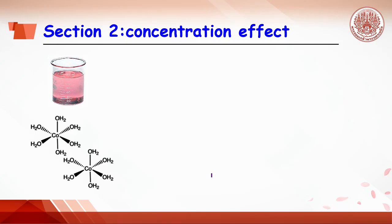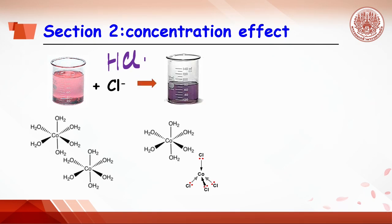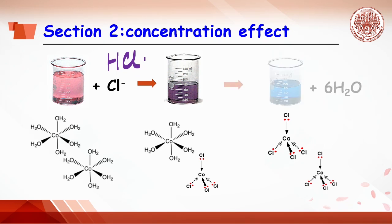Section two is aimed to see the color change by shifting the equilibrium position when the concentration is involved. Start from pink solution of cobalt ion. After adding hydrochloric acid, chloride ion will replace the water molecule to get blue color. Pink and blue color will be mixed and purple color is obtained. Finally, when chloride ion replaces all water molecules, blue color appears. However, when water is added, the blue color also changes to pink.